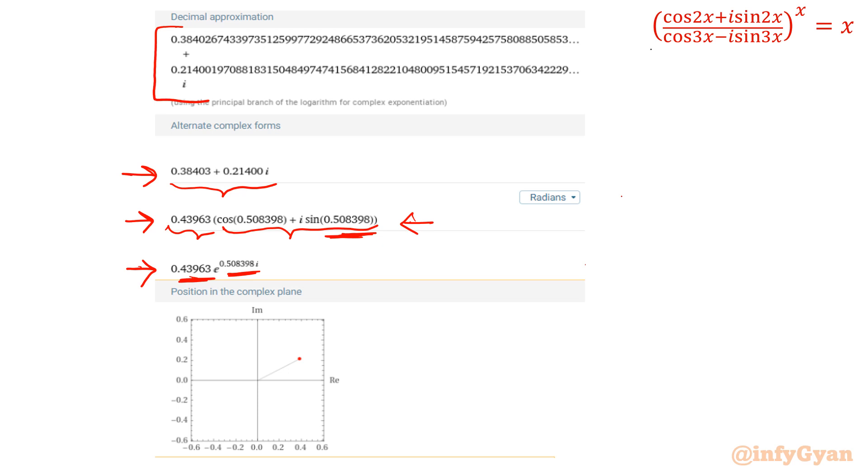In argand plane, how we can represent that point? It is 0.38403 on the real axis and 0.214 on the imaginary. This coordinate, if we want to write, we can write 0.38 at value comma 0.21, real and imaginary. This is how we can solve this question.